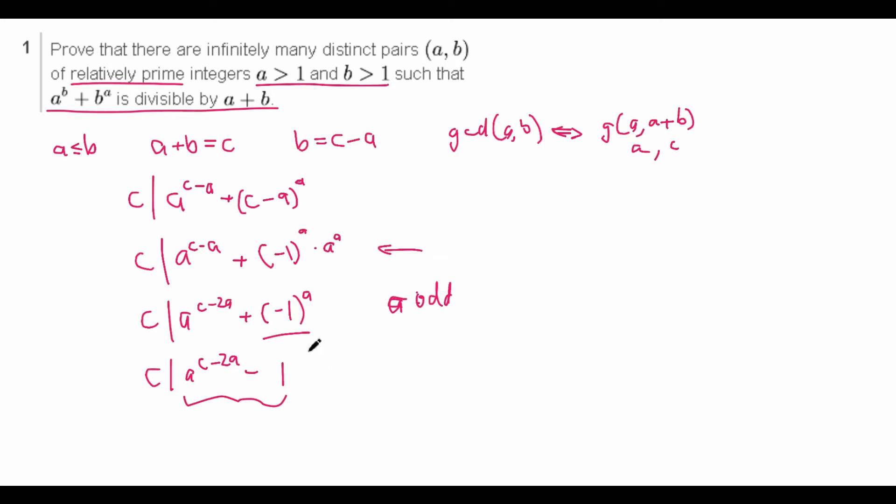And since a and c are relatively prime, this reminds us of the Euler-totient theorem, which says that c divides a^φ(c) minus one. And these are almost the exact same thing. So why not make these actually just the exact same thing? So if we let that happen, we have that c - 2a is equal to Euler-totient function of c. And this is our second assumption. So hopefully this will end up with a valid construction.